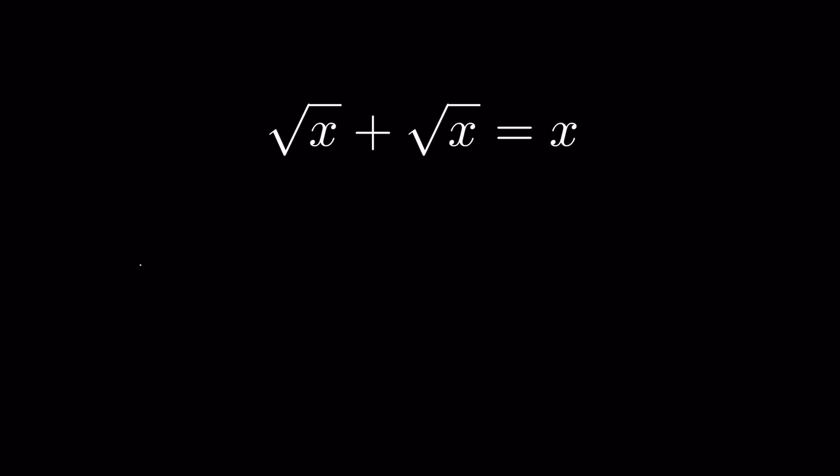Square root of x plus square root of x. We can take square root of x common and write 1 plus 1, or simply write square root of x plus square root of x as 2 times square root of x equals x.